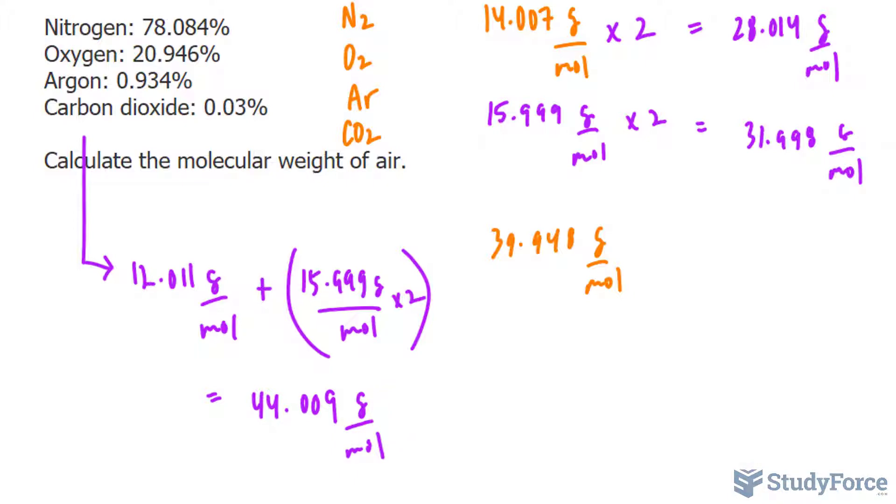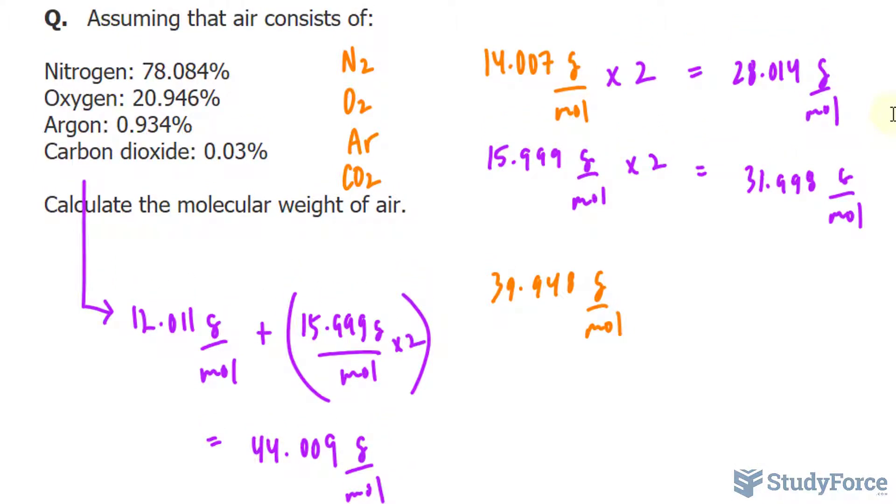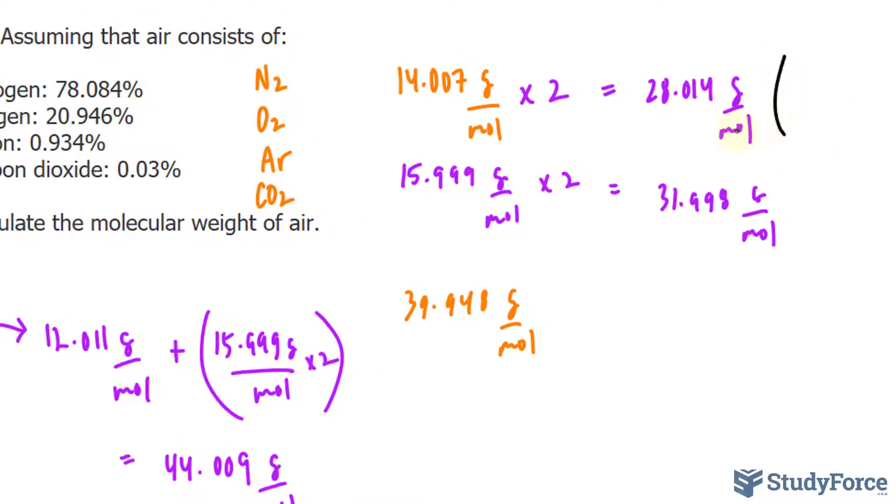Next, we take each of these values and multiply them by their percentage. So we will multiply this by the percentage of nitrogen being 78.084, but this percentage needs to be made into a decimal, so divide it by 100. If we divide this by 100%, we end up with 0.78084. If we divide this by 100%, it's 0.20946.